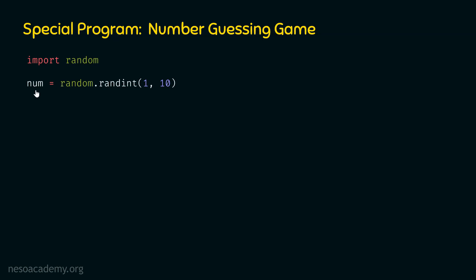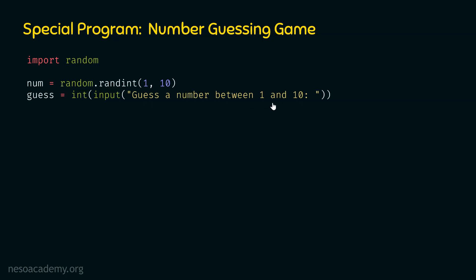After receiving the random number, we need to ask the user to make a guess. For this purpose we need this line: guess = int(input('Guess a number between 1 and 10: ')). We will ask the user to guess a number between 1 and 10, and we use the int() method to convert the string input to an integer. That value is stored in the guess variable. Now we have two variables: num and guess.